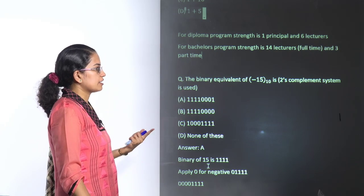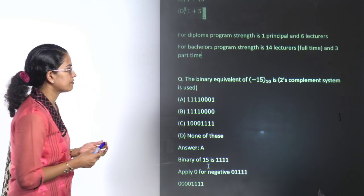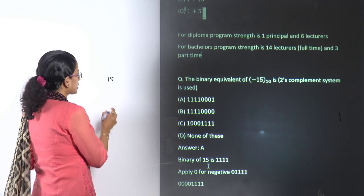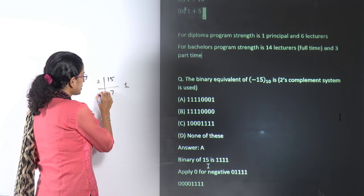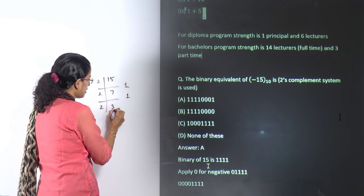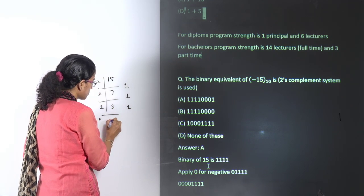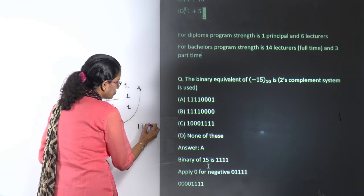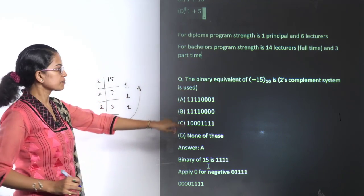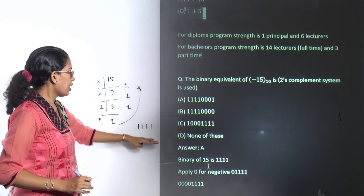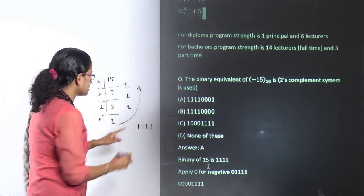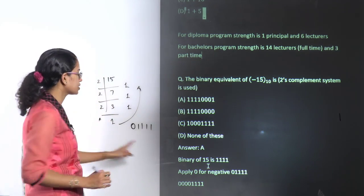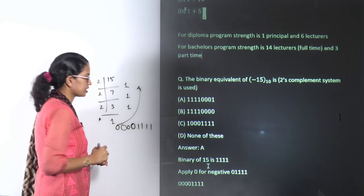Next: the binary equivalent of a negative number in two's complement. First, calculate the binary for 15 — it comes out to be 1111 (four ones). Since it's a minus sign, put a 0 at the beginning. To make it an 8-digit number on an 8-bit machine, include three more 0s, giving 00001111.